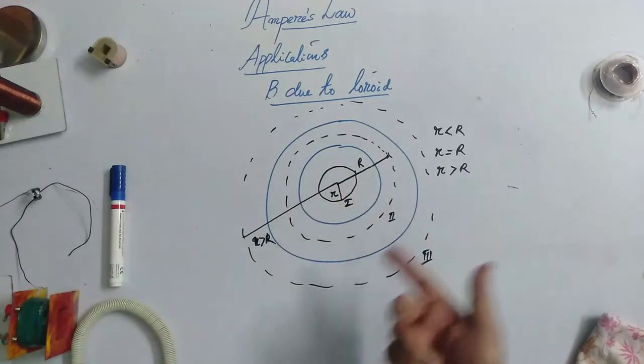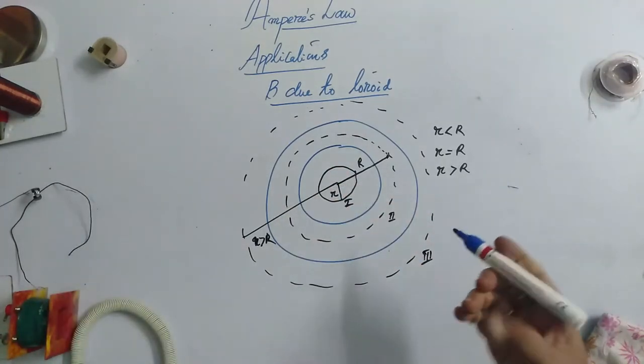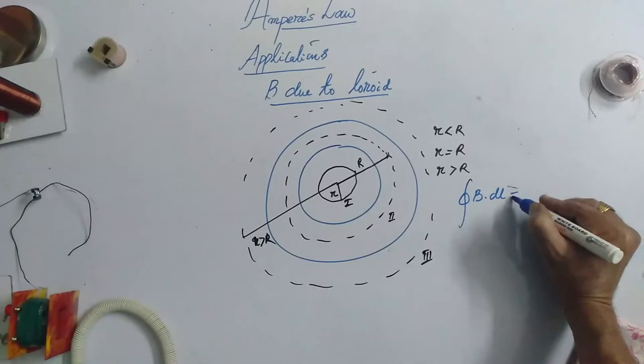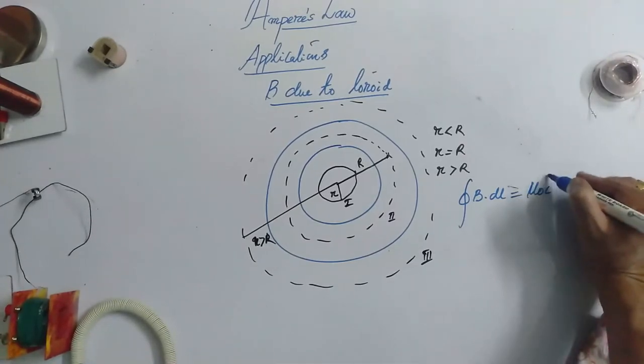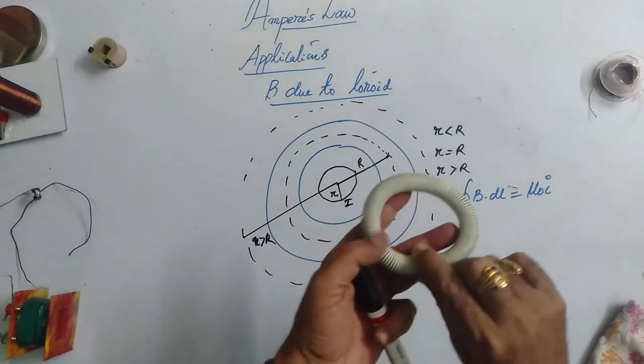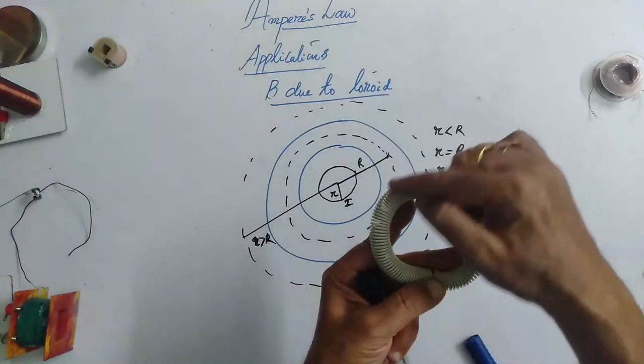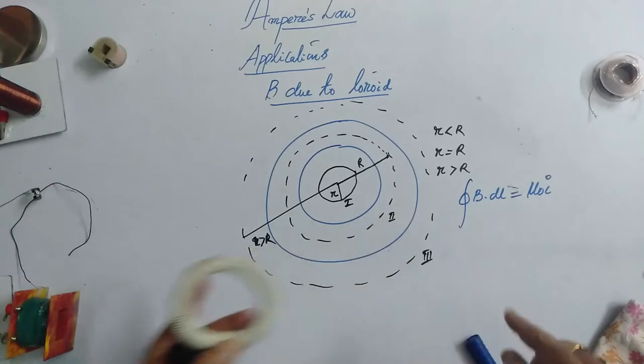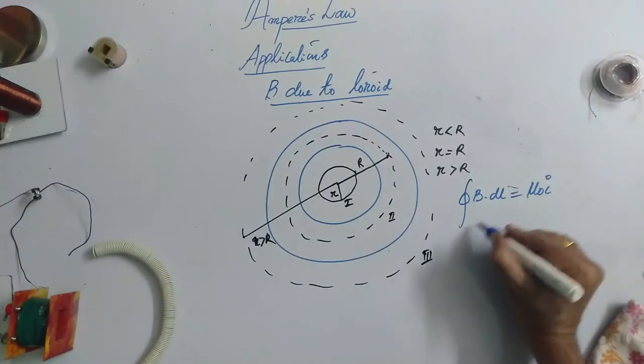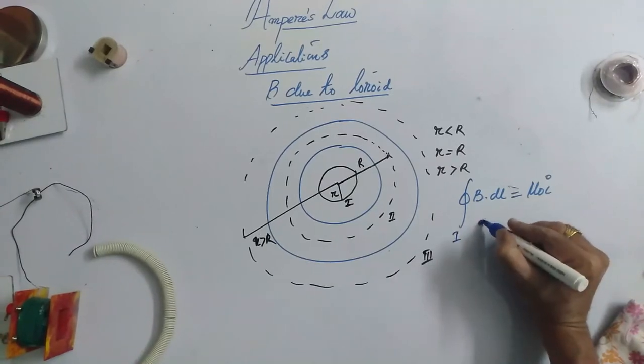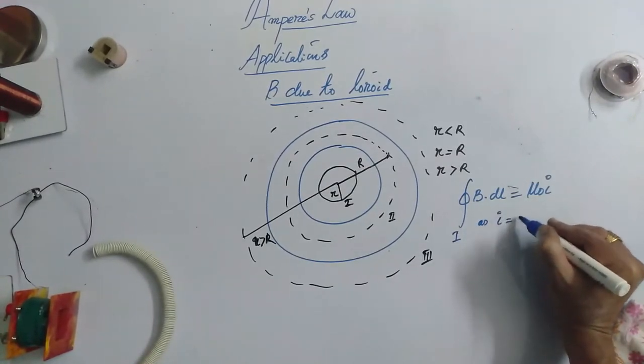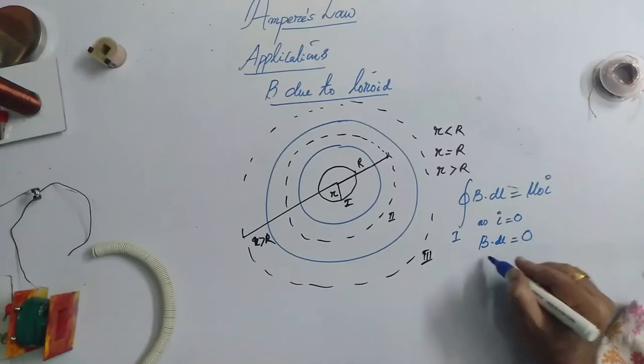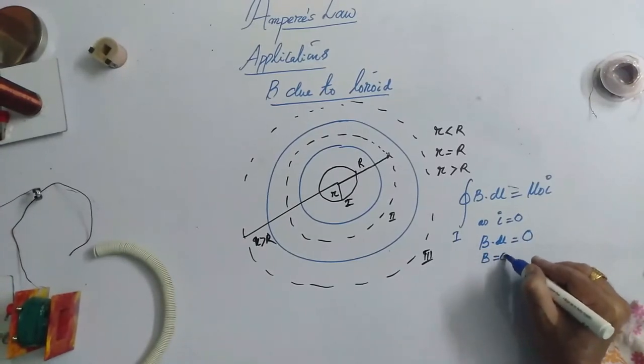Now, for the first loop, it is very easy. Again, we have to take integral over B dot dl and it should be equated to mu naught times i, the current threaded in. We are considering the current is in these spirals. So, what about the current in this loop is 0. Therefore, as this is for first loop, as i is equal to 0, B dot dl is also equal to 0. Therefore, dl cannot be 0. Therefore, B must be 0.